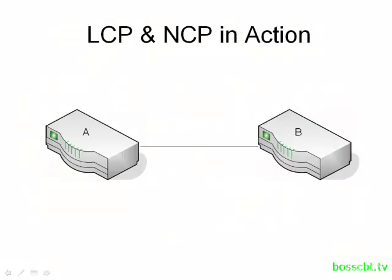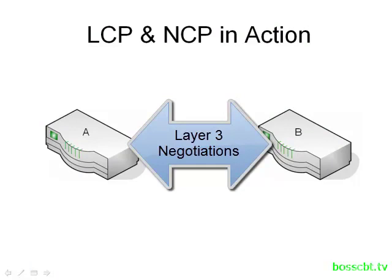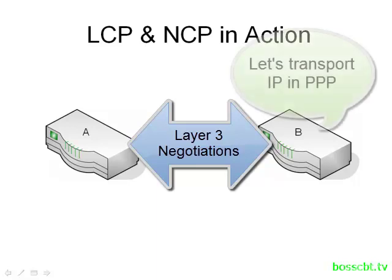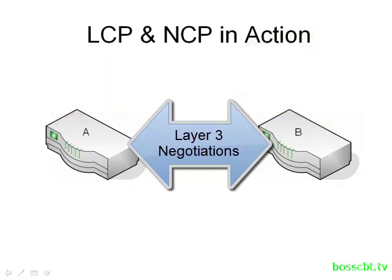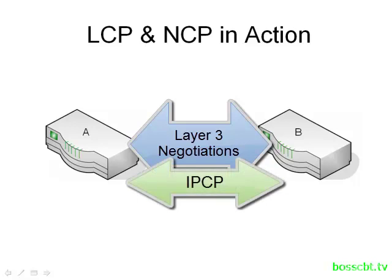Picking up the LCP example again: after the basic link establishment, negotiations, and link testing, the routers get to the point where they need to negotiate how they'll transport the Layer 3 protocols. Continuing with the IP example, both routers would then use the IP Control Protocol — IPCP — which is one of many network control protocols within PPP, to negotiate and transport IP packets inside the data portion of the PPP frame.